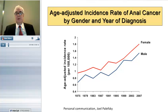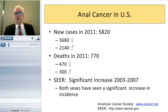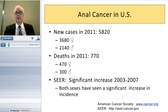Let's talk about why we are encouraging people to think about anal cytology screening. The incidence of anal cancer in the general population is relatively low — on the order of 1 to 2 per 100,000 — but it is increasing in both men and women at about 2% per year. This has been a fairly constant rate since the 1970s. In 2011, there were 5,820 cases diagnosed, the majority in women, and 770 deaths. The SEER database shows a significant continuing increase between 2003 and 2007.